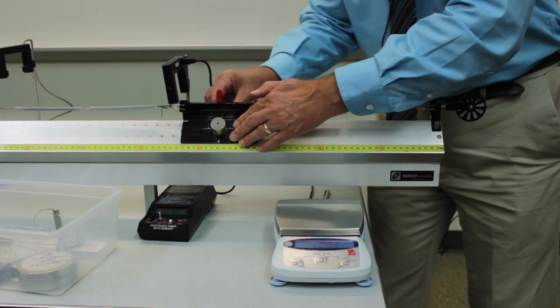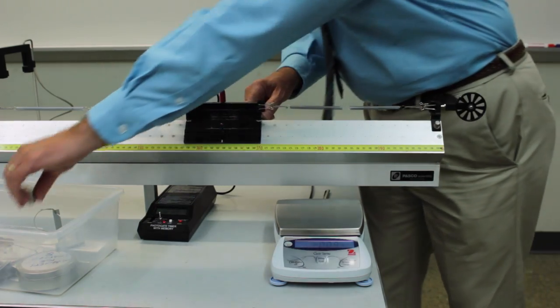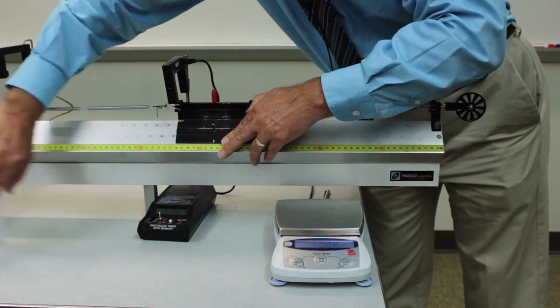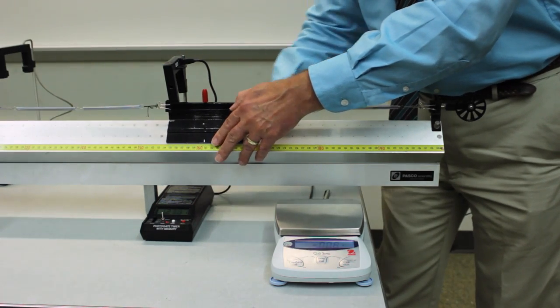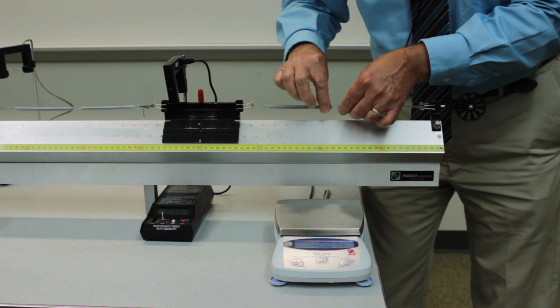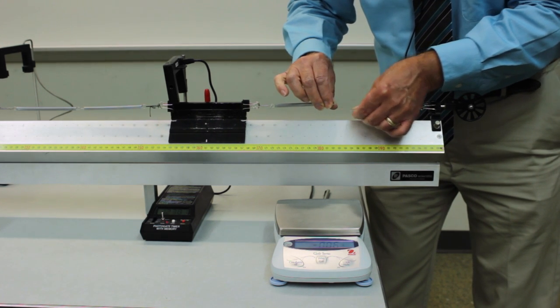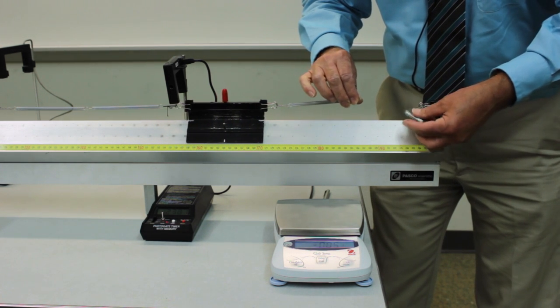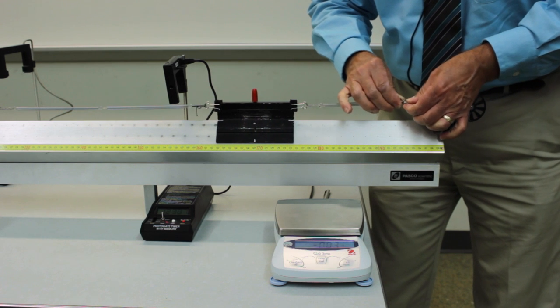Then what we'll do is remove the extra masses. Set those aside. And now we're going to change the spring constant. So to do that we'll just unhook one of the springs. Just remove it completely from the system.